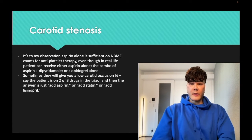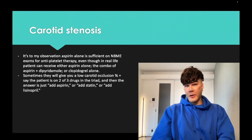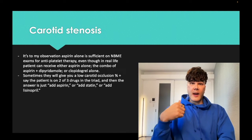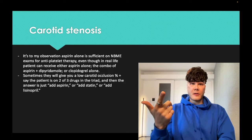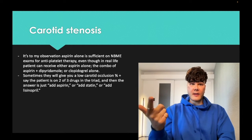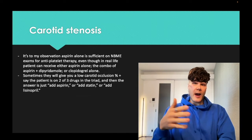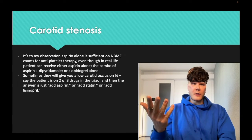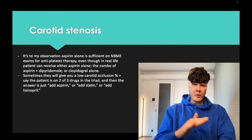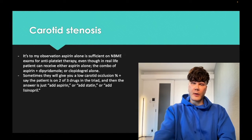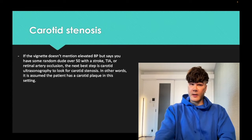A common vignette gives you a 65-year-old with hypertension and TIA, carotid duplex showing 50% occlusion — below threshold. They'll tell you he's on aspirin and lisinopril. What should be done? Add a statin. Or he's on a statin and lisinopril — add aspirin. You just need to know that triad and add the third drug. If already on all three and below the endarterectomy threshold, the answer is no further modifications necessary.